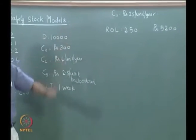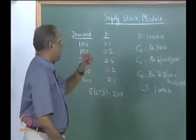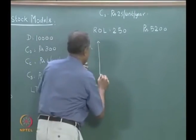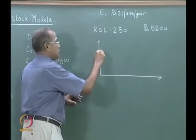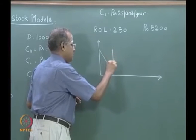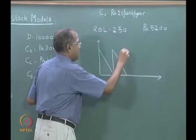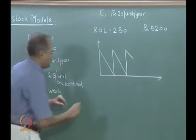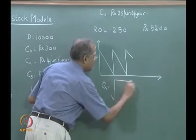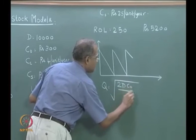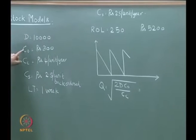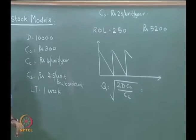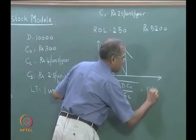We compared this with the basic inventory model — the familiar sawtooth model with continuous demand. When optimized, Q equals root over 2DC₀ divided by Cc. With D=10,000, C₀=300, and Cc equal to 20% of rupees 20 which is 4, this gives Q equal to 1224.74.